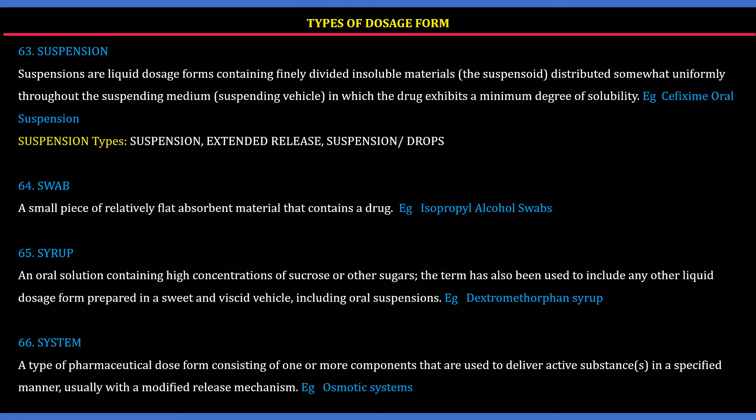63. Suspension: Liquid dosage forms containing finely divided insoluble materials distributed uniformly in a suspending medium in which the drug exhibits a minimum degree of solubility. Example: cefixime oral suspension. 64. Swab: A small piece of relatively flat absorbent material that contains a drug. Example: isopropyl alcohol swabs.